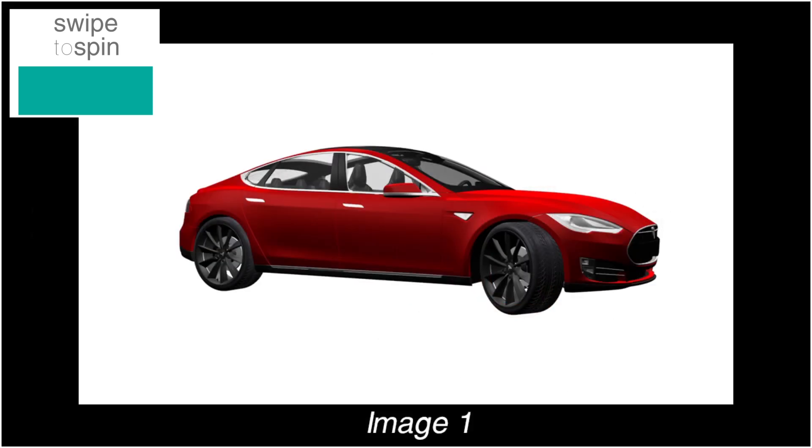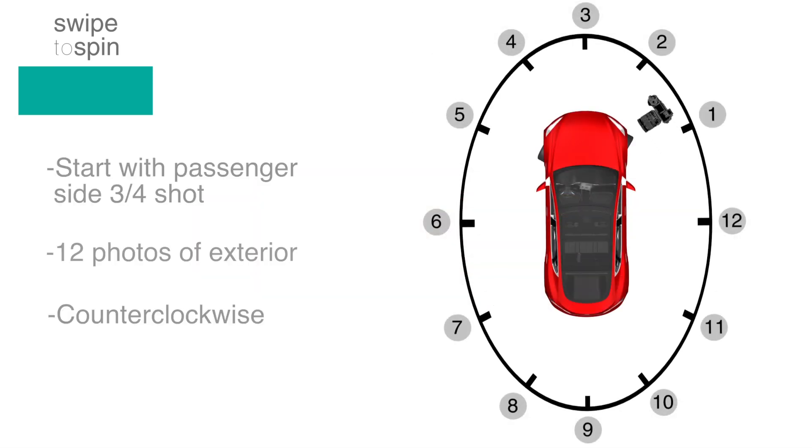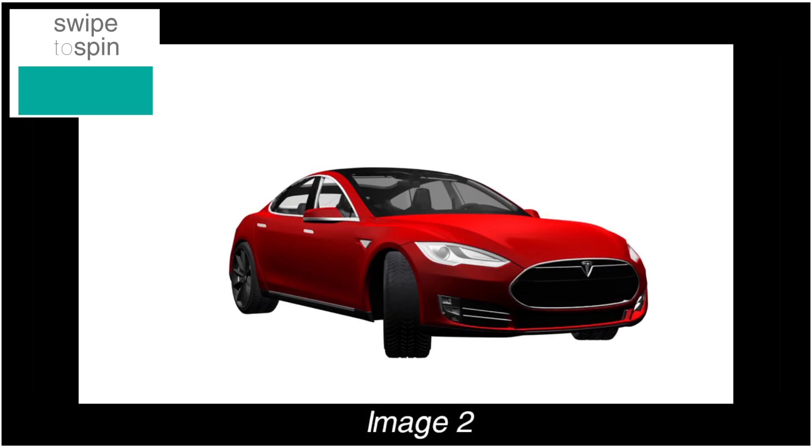Begin with the exterior 360 photos. Start with a front passenger side 3-quarter shot and take 12 photos of the car's exterior while walking around the car in a counterclockwise direction.